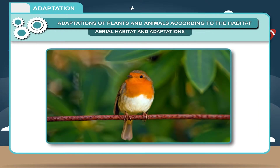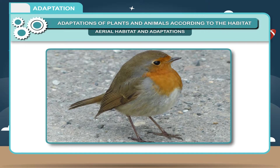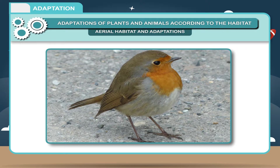2. Their forelimbs are modified into wings. 3. The bones are light, hollow and spongy and contain many air cavities.